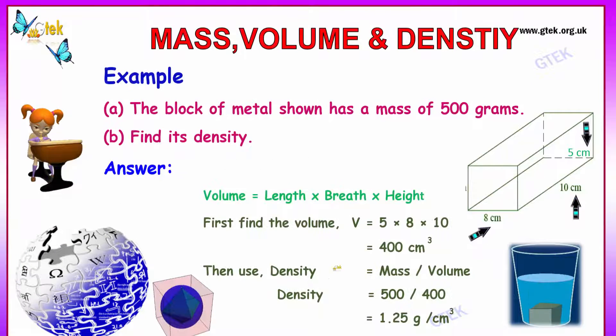Now we have a block of metal with a mass of 500 grams and we want to find the density. You can see it's 10 cm length, the height is 5 centimeters and the width is 8 centimeters.